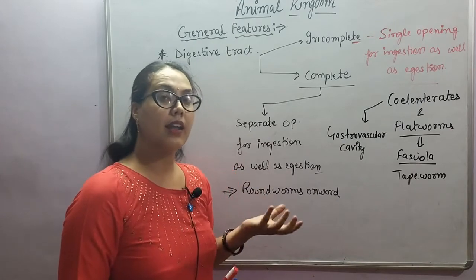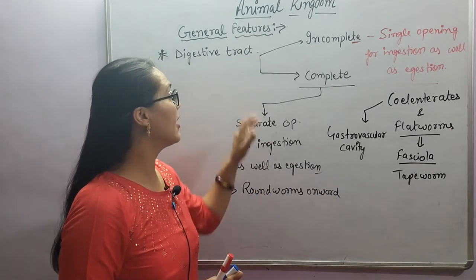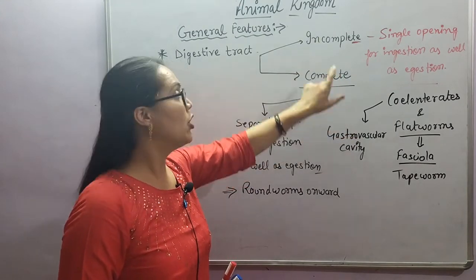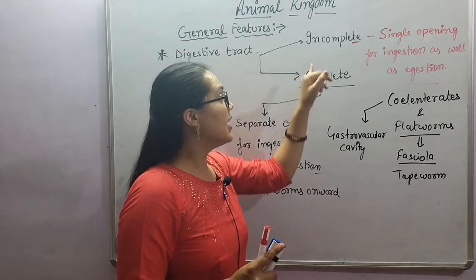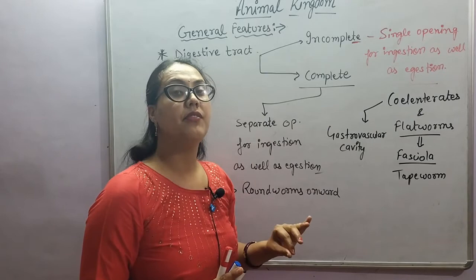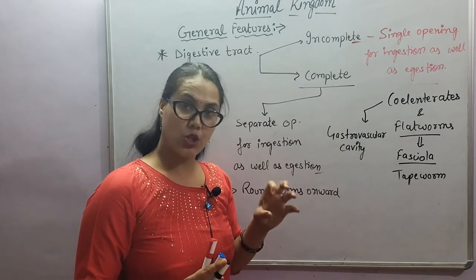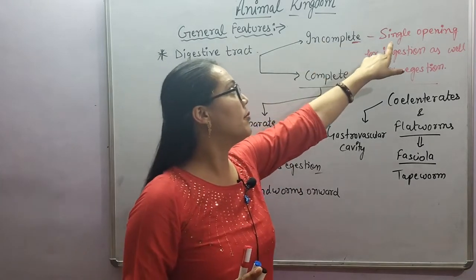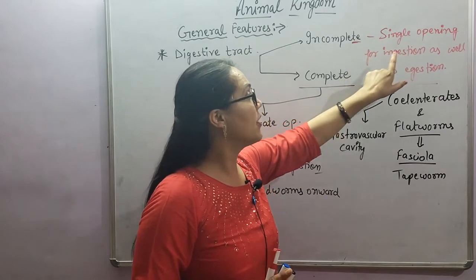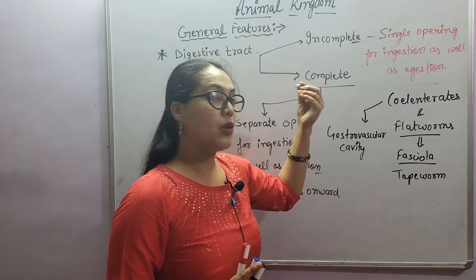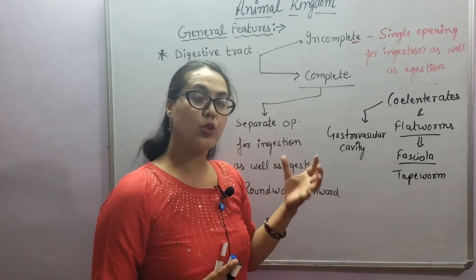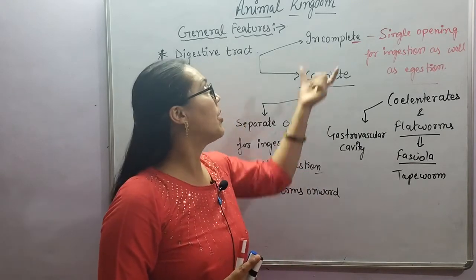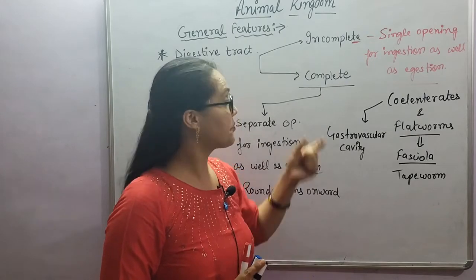The digestive tract - how it is structured in different animal groups, we will see that now. The digestive tract is mainly of two types: incomplete and complete. Incomplete digestive tract means a tube-like structure where digestion of food takes place, but there is only a single opening for both ingestion and egestion - food intake and waste removal.